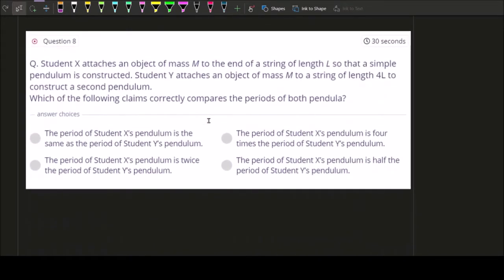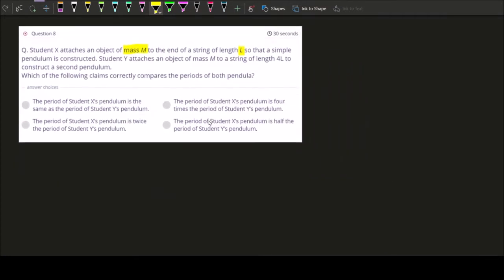Question 8 says you have a student which attach an object of mass m to the end of a string of length L, so that you create a simple pendulum. Then you have another student called student Y and this student attach an object of mass m, it's the same mass as student X, but this time the string is 4 times the length of the simple pendulum of student X. So student Y have a longer pendulum compared to student X. So now they want you to compare the period of both pendulum. So how do we do this thing?